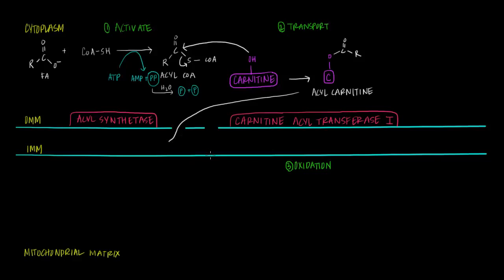You might be wondering why we went through all the trouble to create this acyl-carnitine molecule if these porins are permeable to a lot of things, including even fatty acids. Why can't the fatty acids just go through these porins and get into the mitochondrial matrix? Well, remember we're only halfway home. We still have to traverse the inner mitochondrial membrane to get to the mitochondria, and the inner mitochondrial membrane does not have these nice pores — it's far less permeable to molecules.